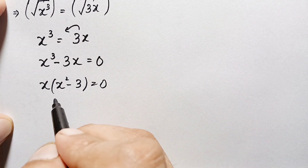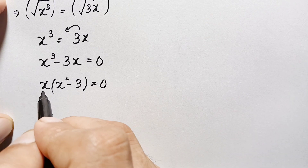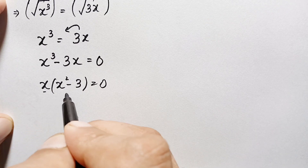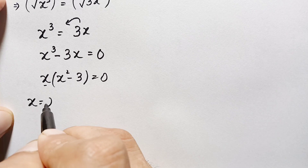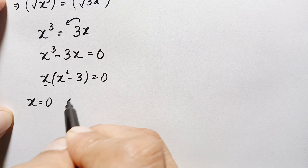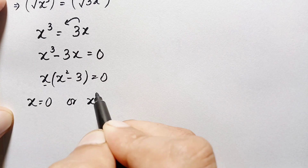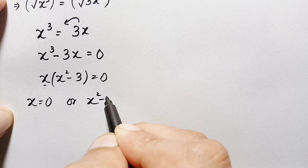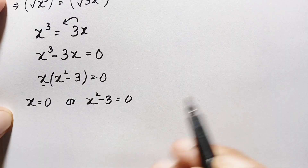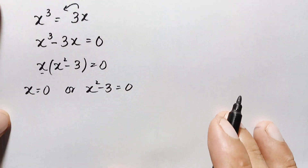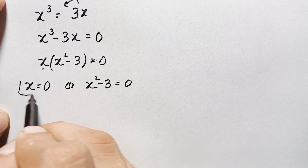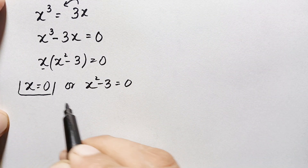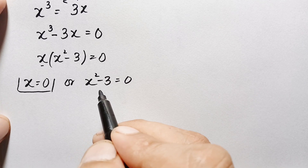Since the product of these two expressions is zero, either x equals zero or x squared minus 3 equals zero. From the first factor, x equals 0, and this is our first real solution.